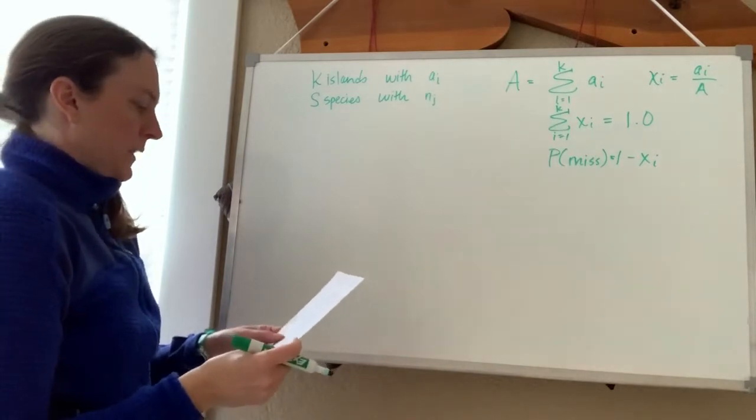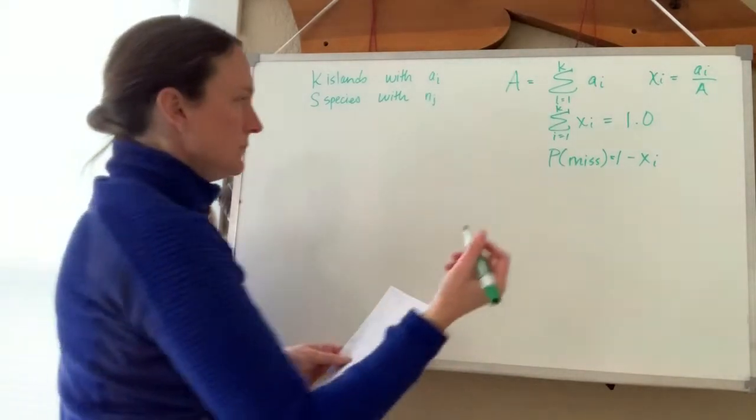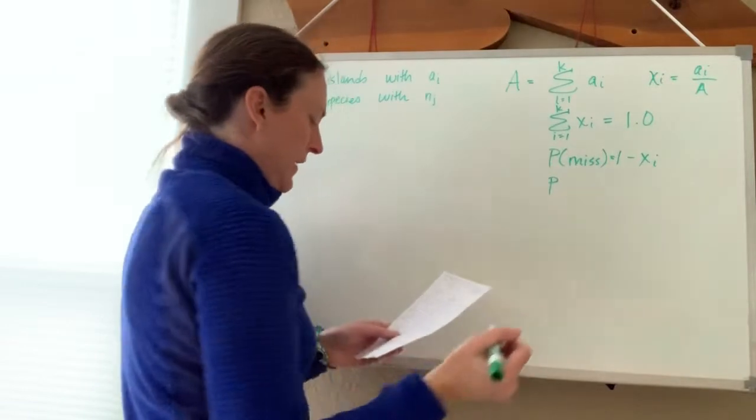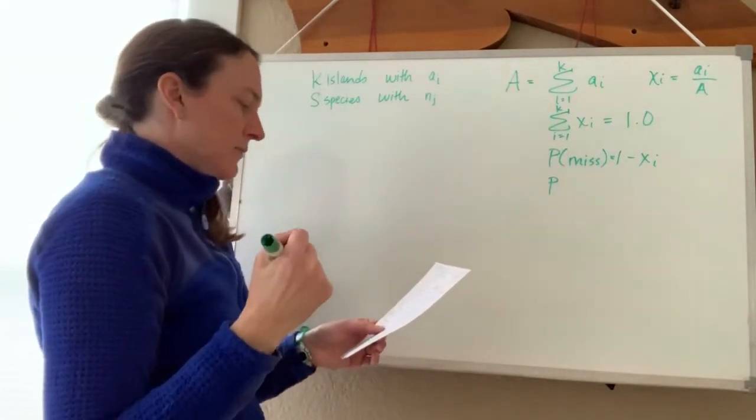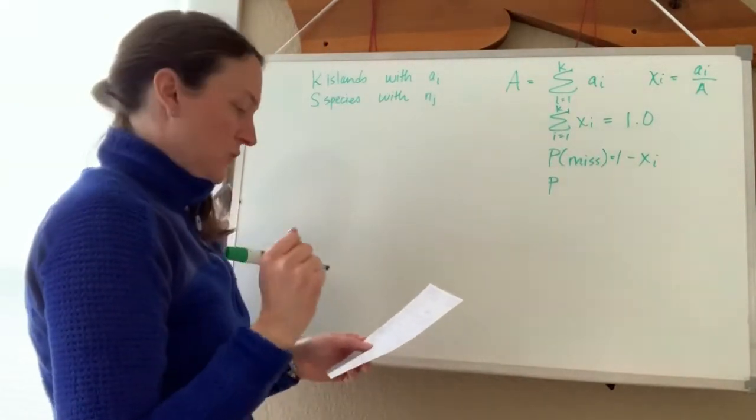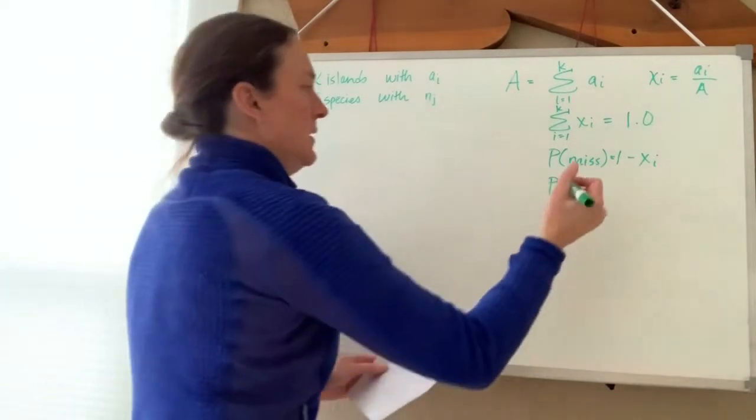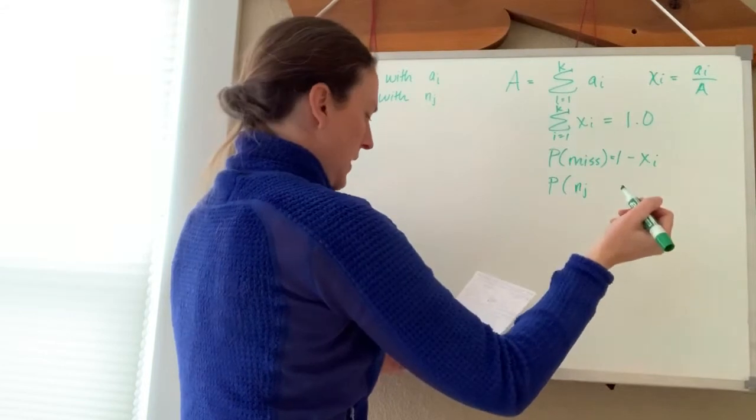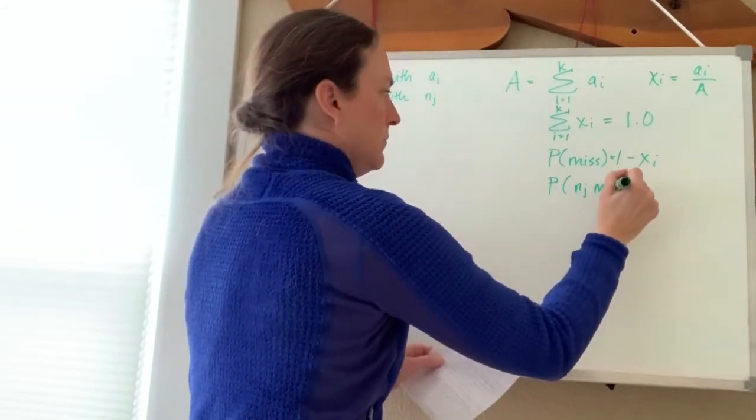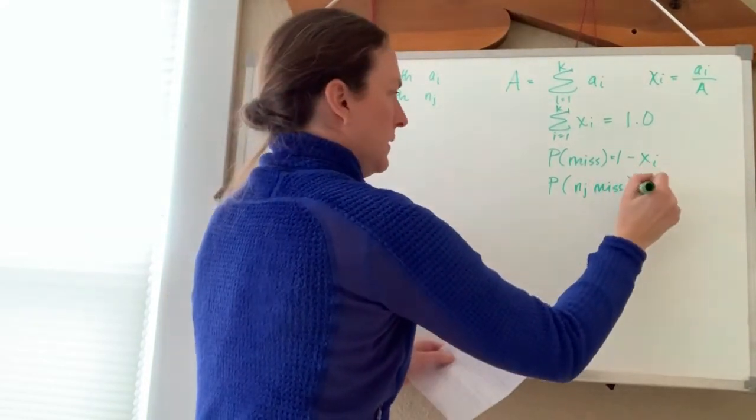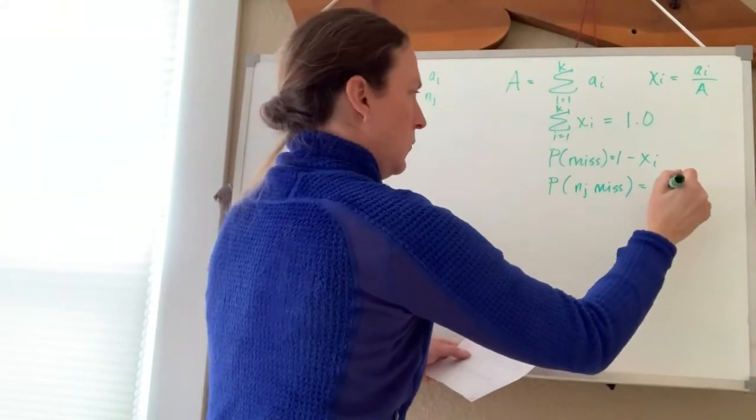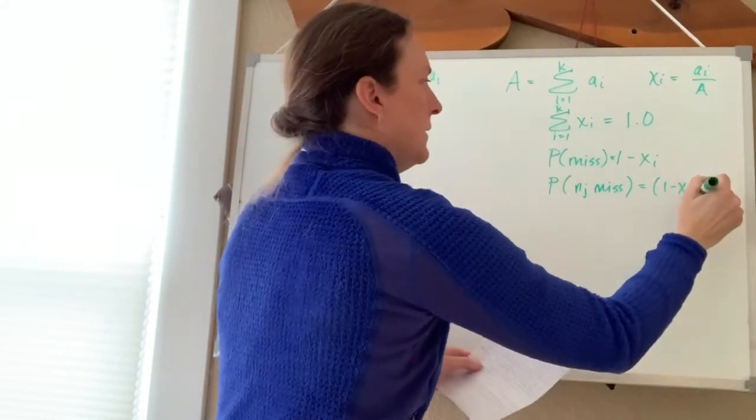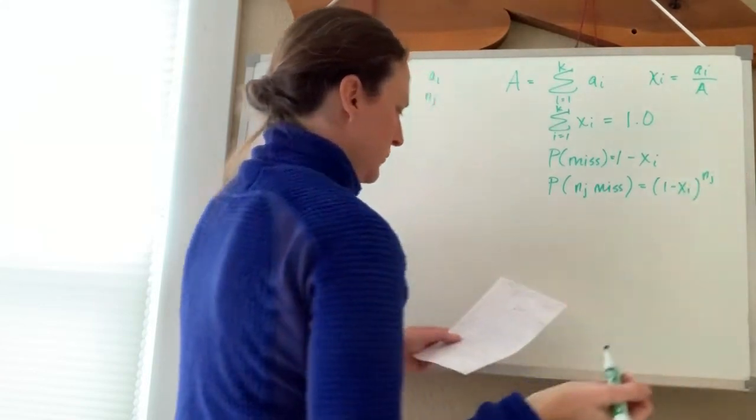So then the probability that every individual of some species j will miss the island would be the probability that all n_j individuals miss, which would be (1 minus x_i) to the power of n_j.